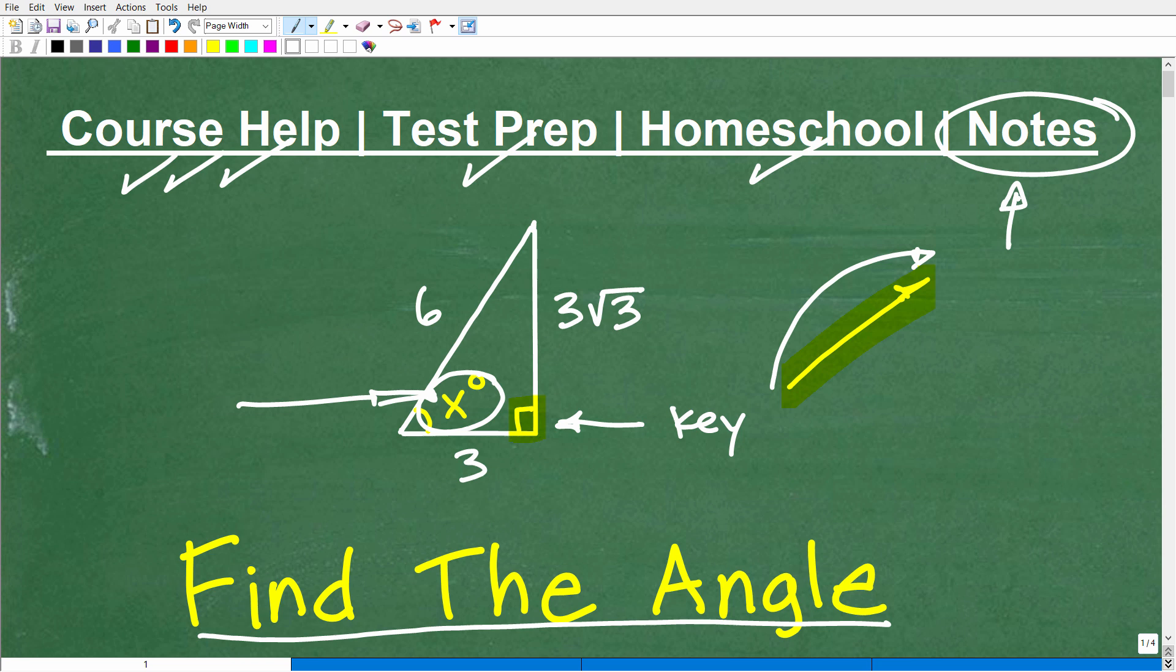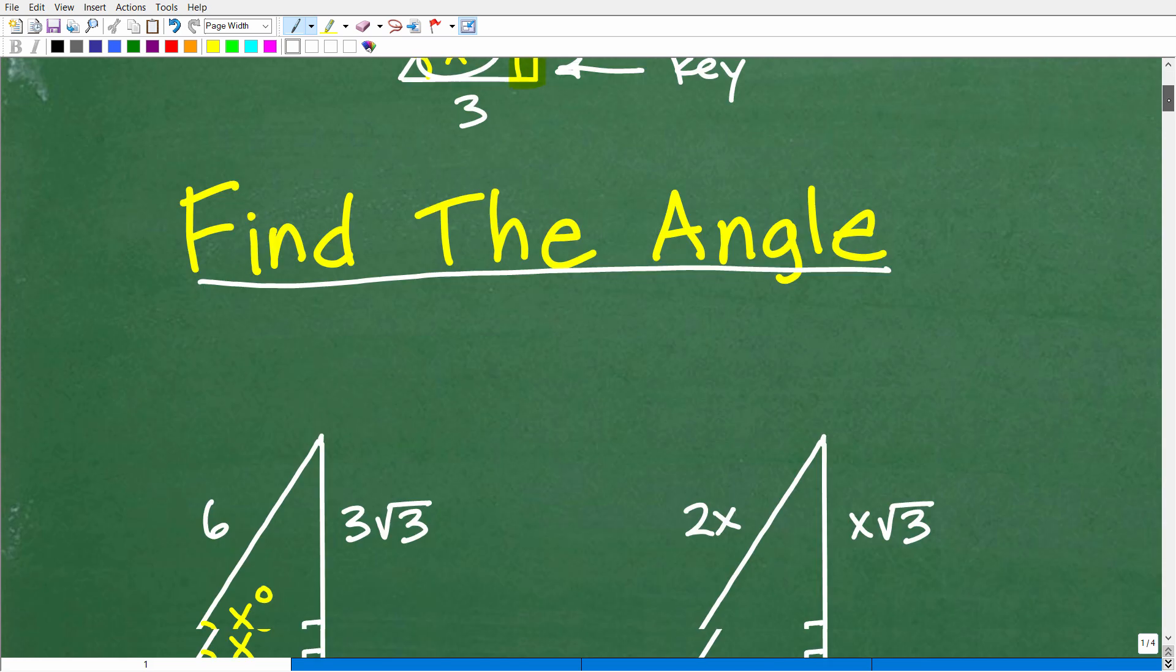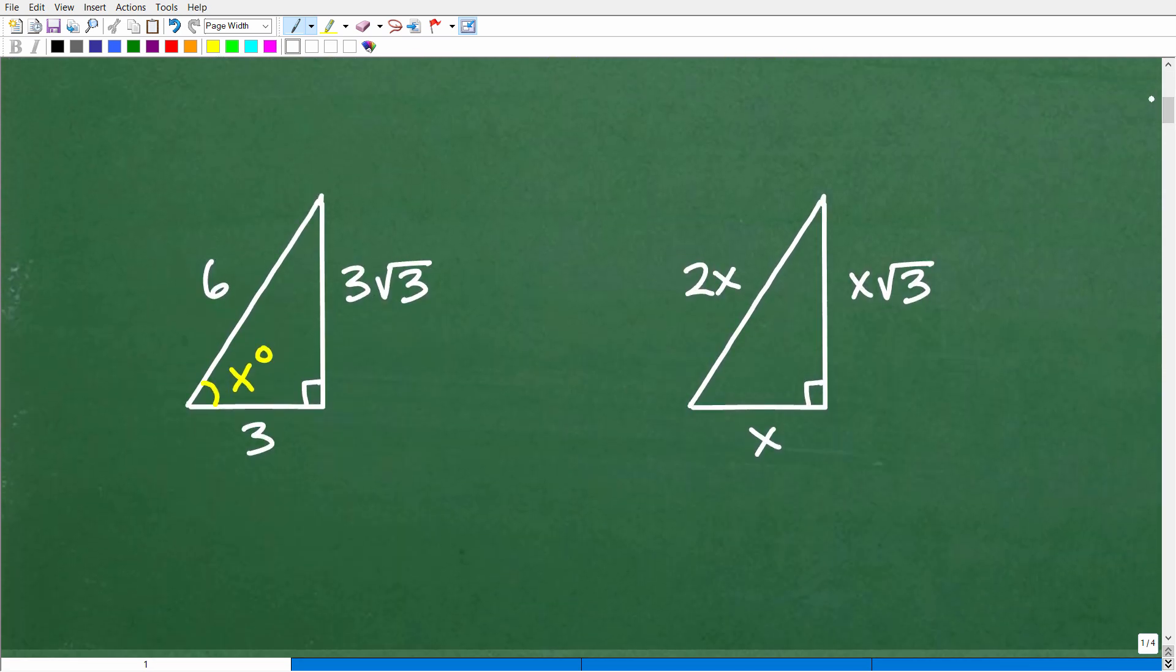Okay, so if you know how to do this problem, go ahead and put into the comments section this missing angle. What is this angle right here in this corner? X degrees, given this information. And with that being said, let's go ahead and get into how to solve this.